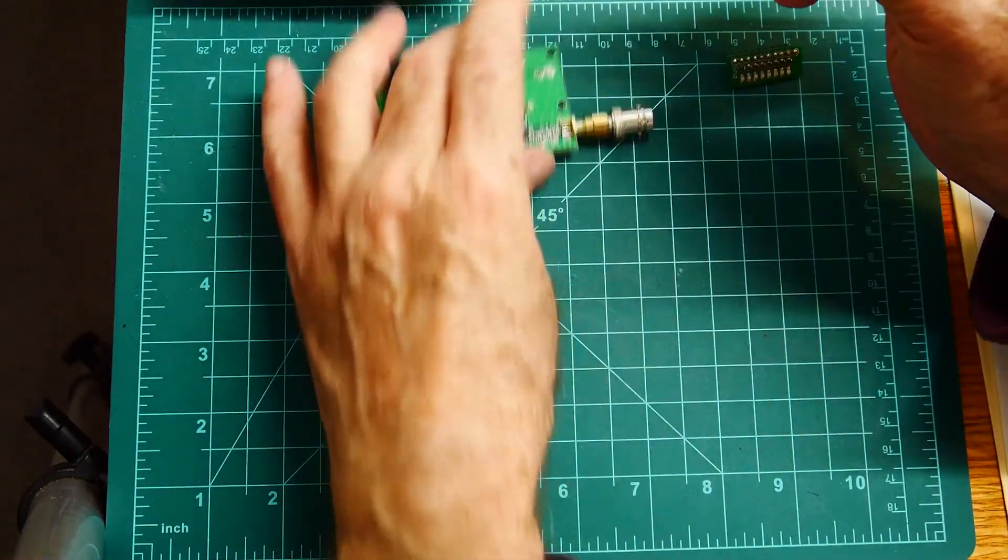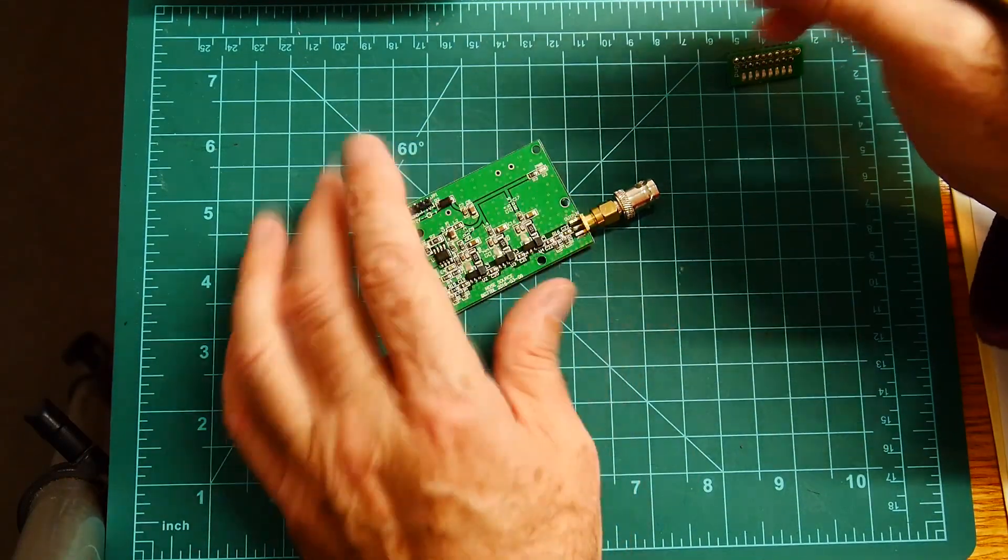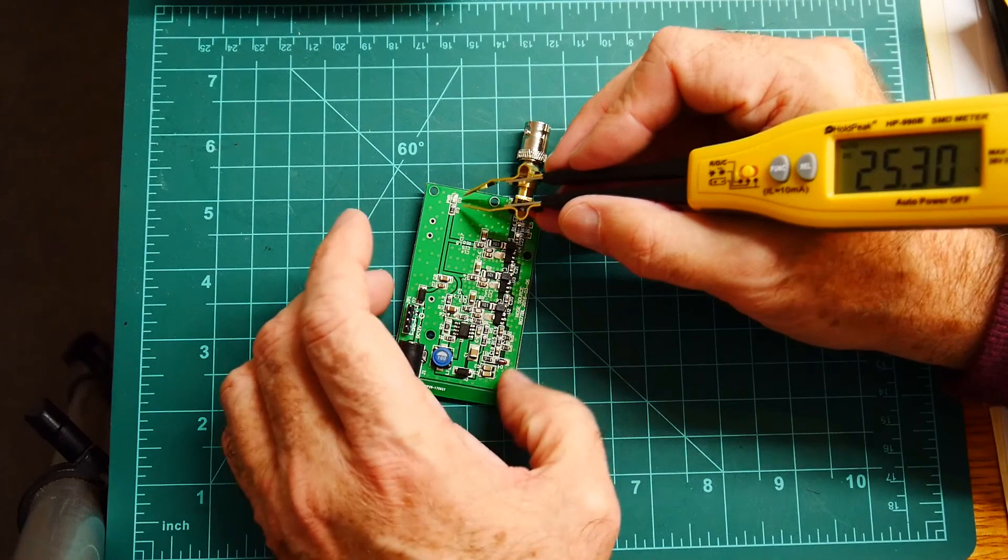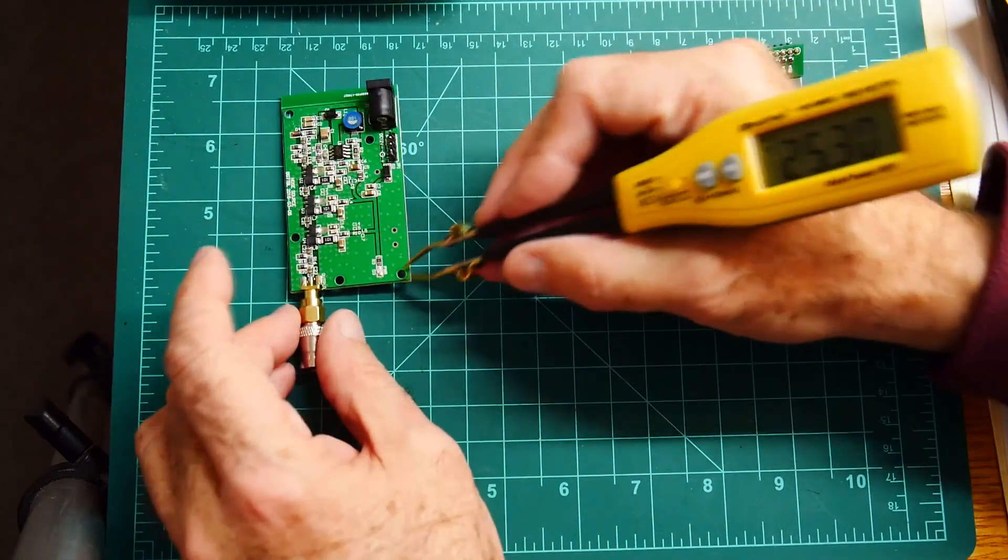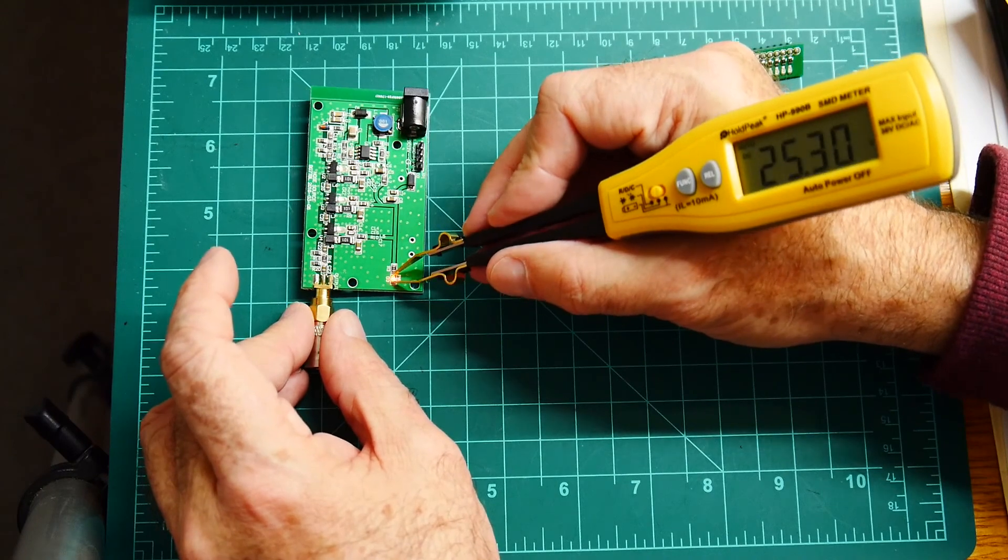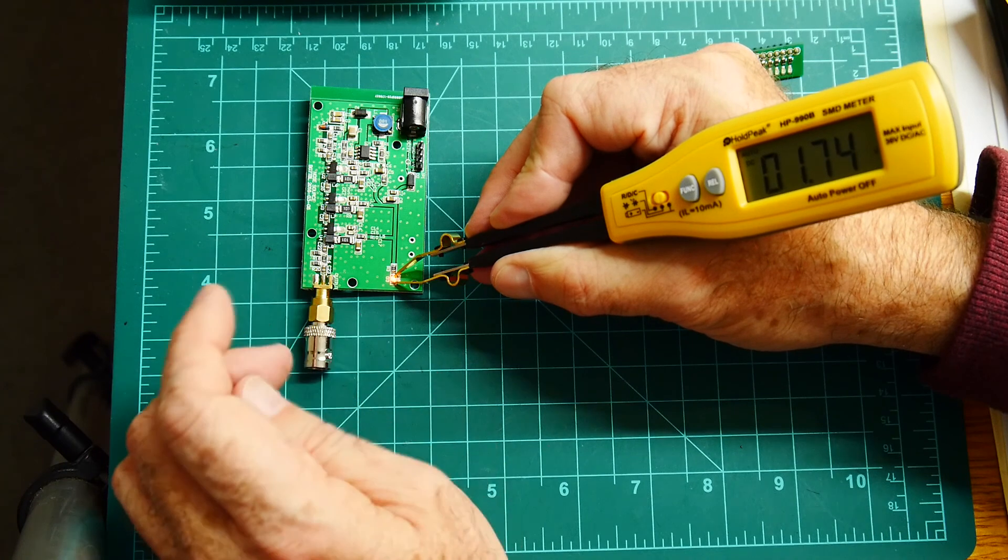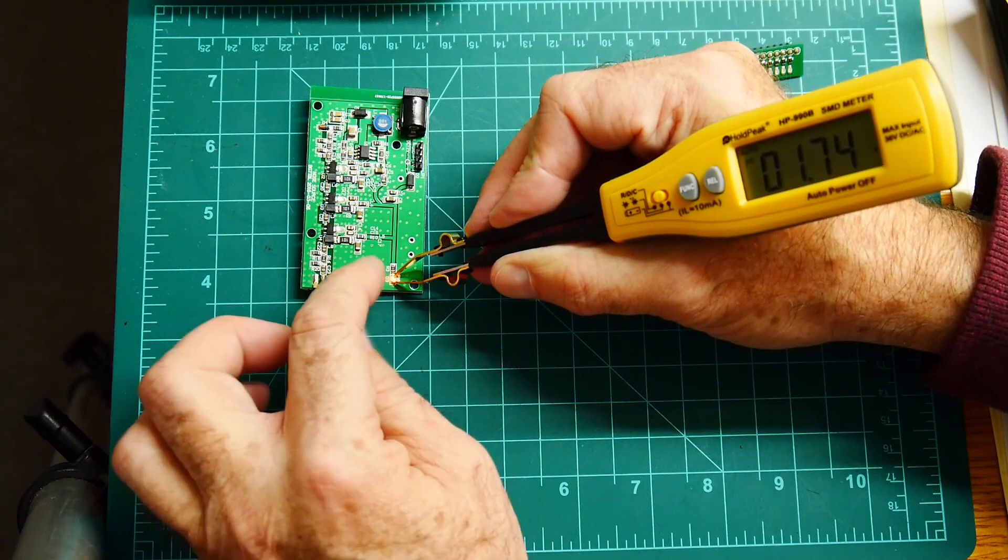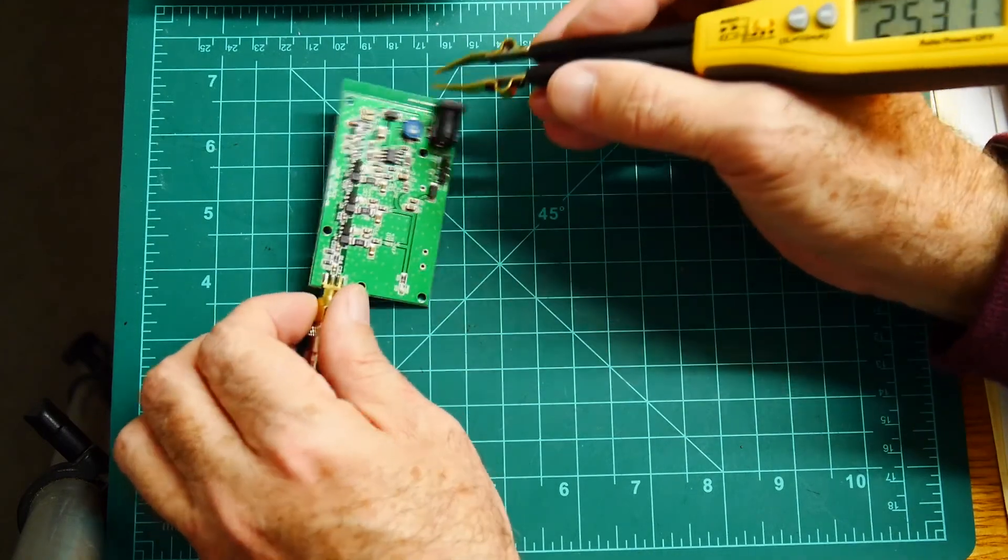Here's a board that will be coming up in a future video. This is a noise source. But it has an LED on board. Let's see if we can. There we go. It's a red LED. And I'm measuring 1.74 volts. So probably a gallium phosphide LED.